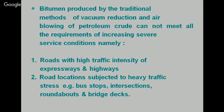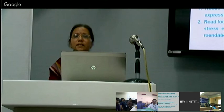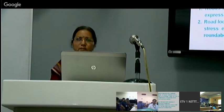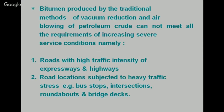Bitumen is generally produced by traditional methods of vacuum reduction and air blowing of petroleum crude, and it cannot meet all the requirements of increasing severe service conditions — namely roads with high traffic intensity such as expressways and highways. Road locations subjected to heavy traffic stress include bus stops, intersections, roundabouts, and bridge decks, where we need special materials such as mastic or polymer modified binders.